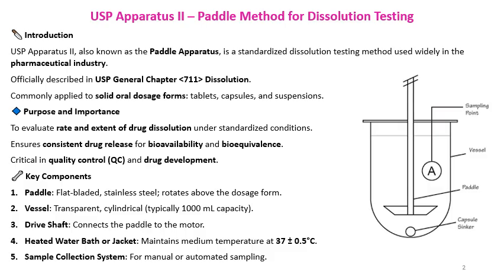It is also called USP apparatus 2 and is the most widely used dissolution apparatus in the pharmaceutical industry. Around 80 to 90 percent of the dissolution methods for formulations are developed using the paddle apparatus. Mainly for oral formulations, the paddle apparatus is used. It is officially described in the US Pharmacopoeia, General Chapter 711.